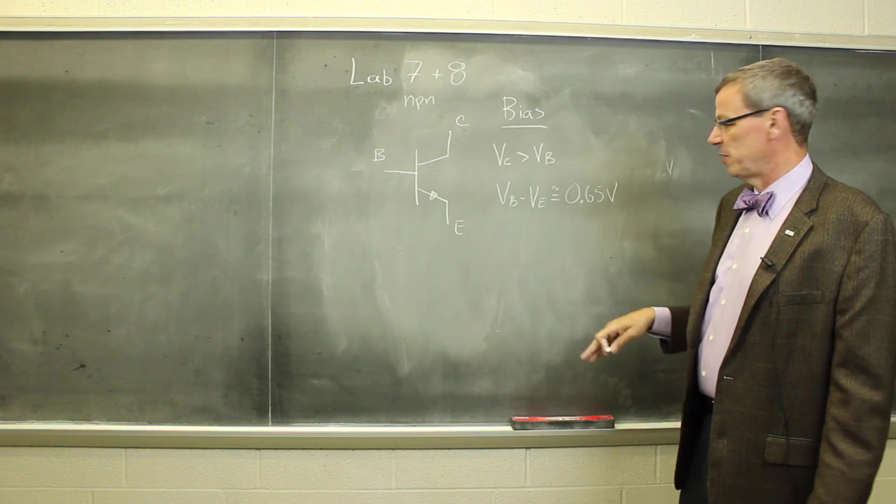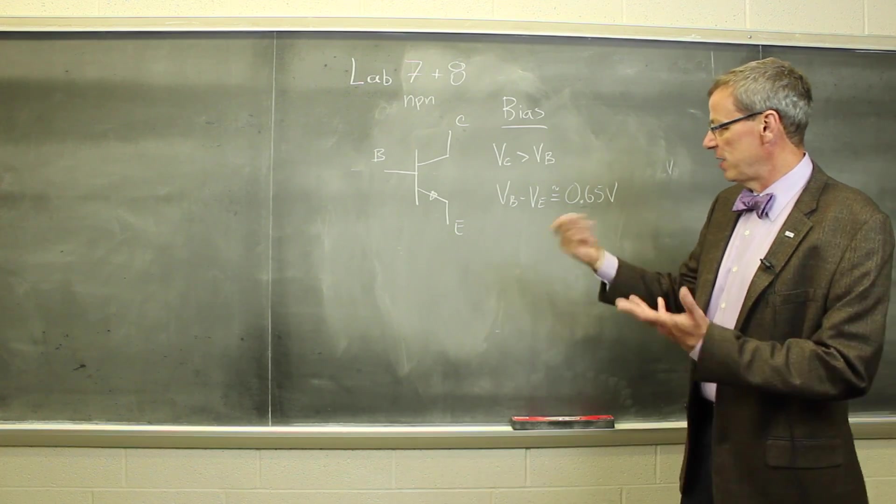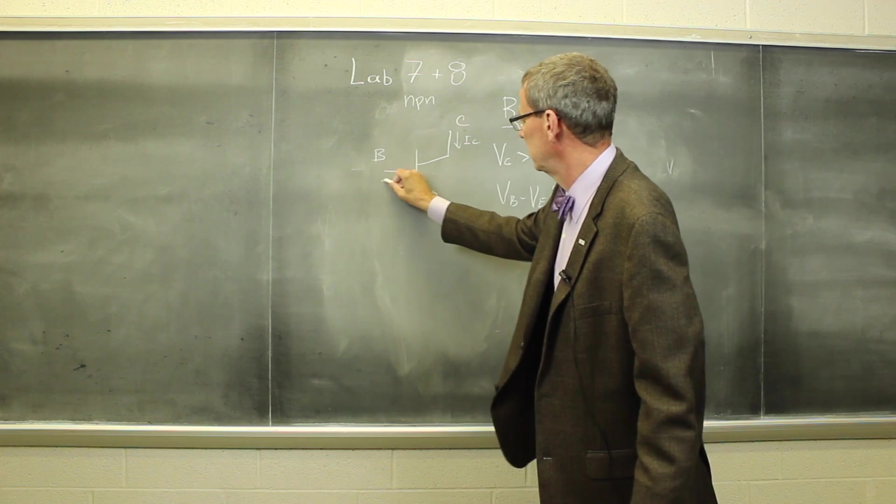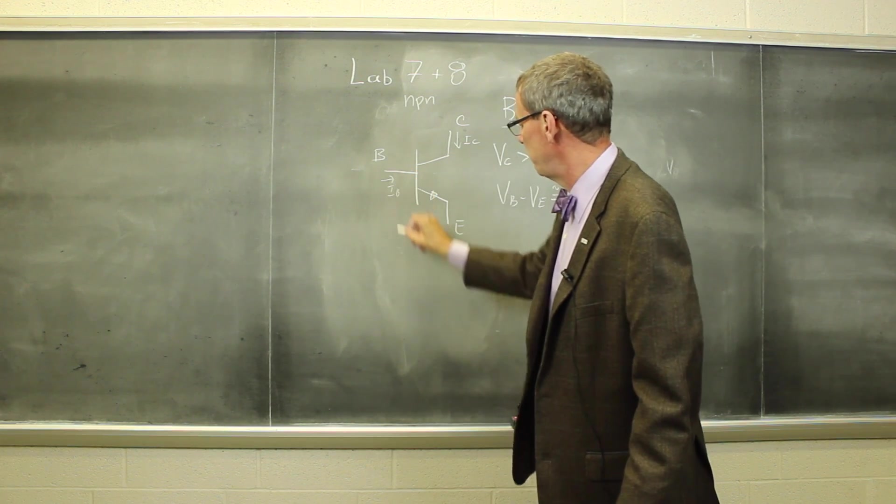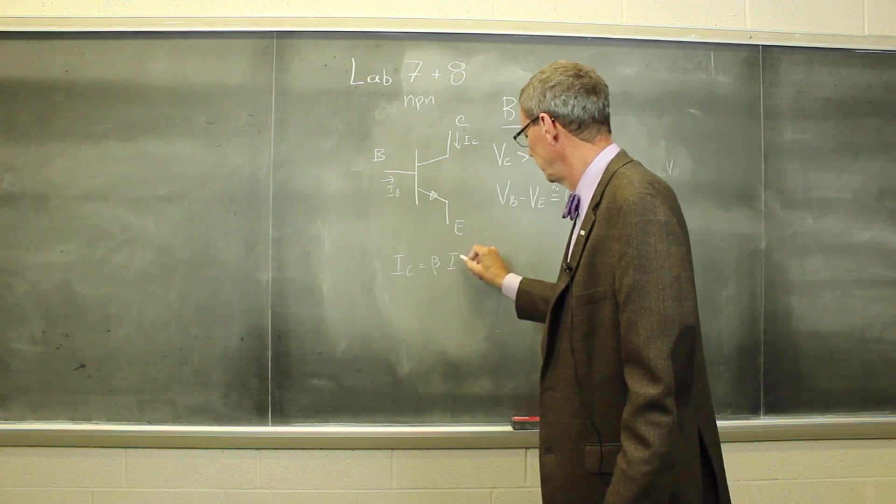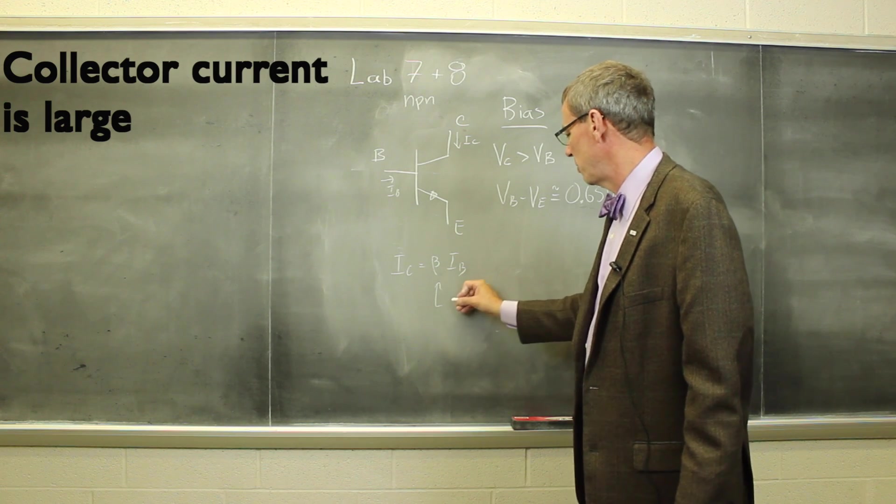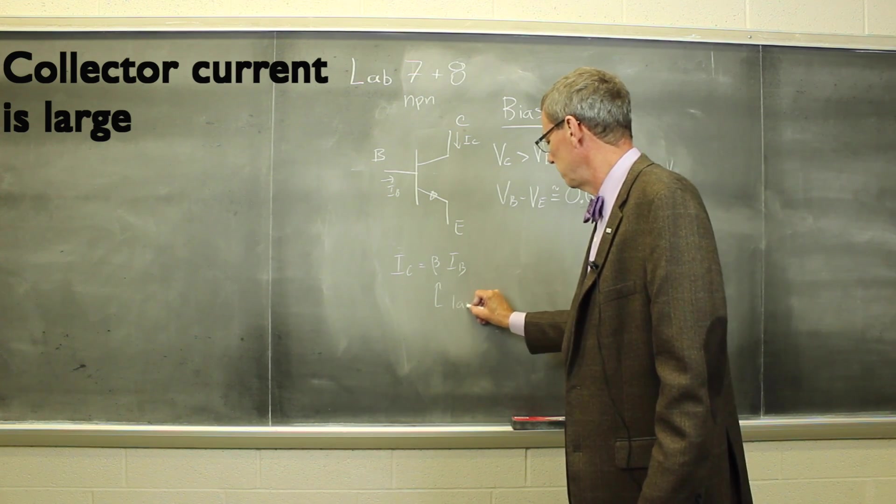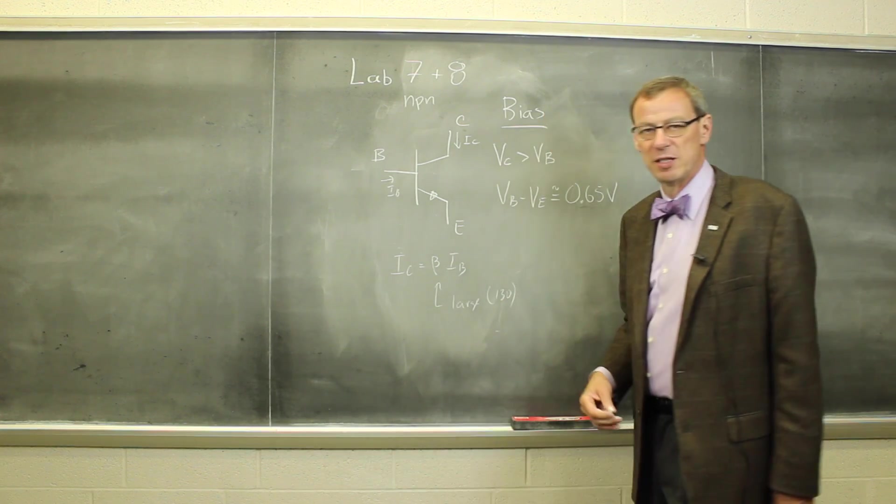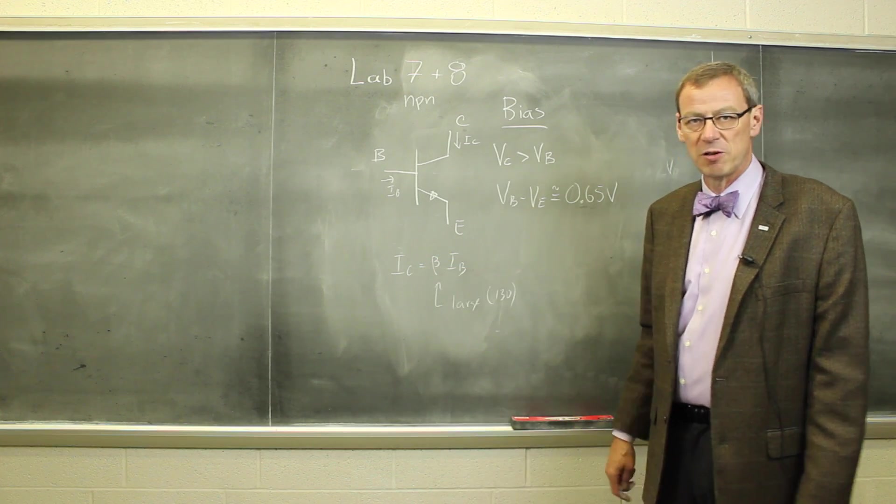So collector voltage bigger than the base. Then we have a diode drop here. And then we have the property that the current into the collector and the current into the base are related by this constant beta, or this transistor parameter, which is large. In our case, it's about 130 or so for the transistors that we're going to be using. So a small current into the base leads to a large current into the collector.